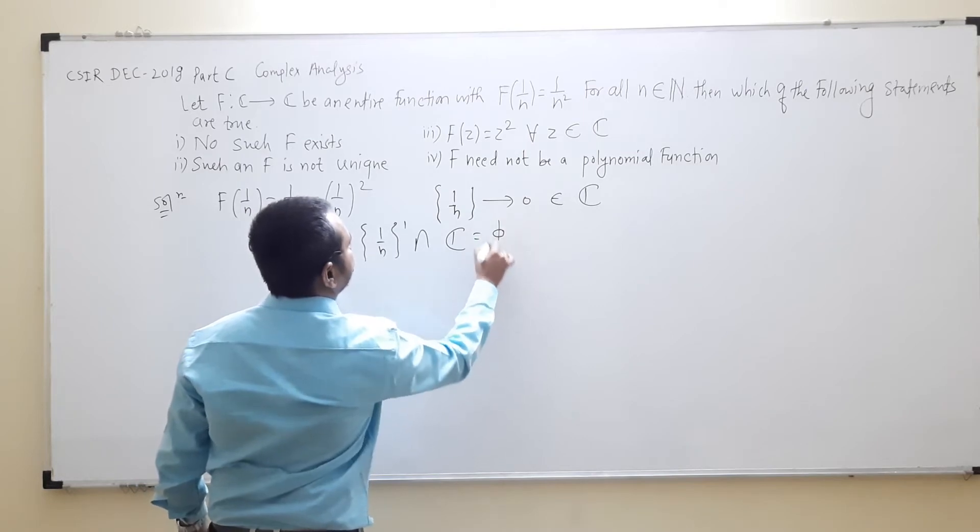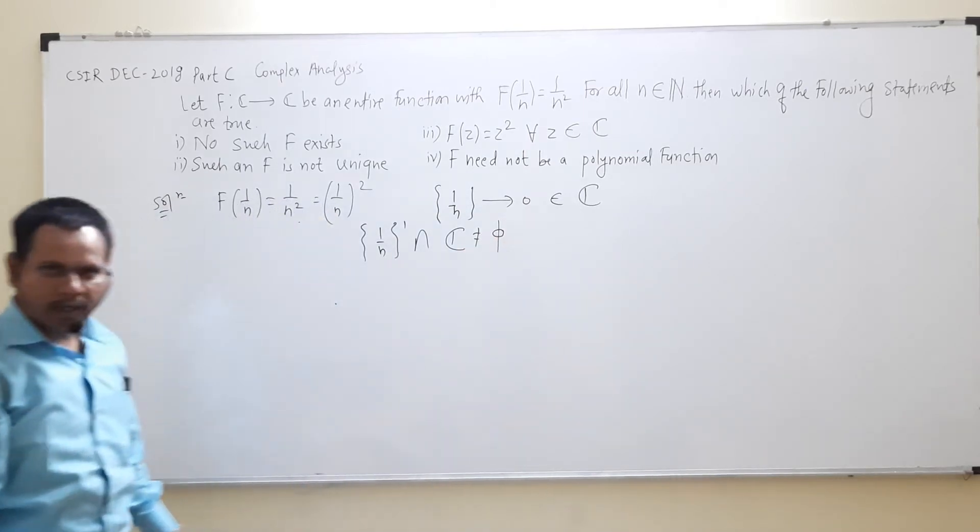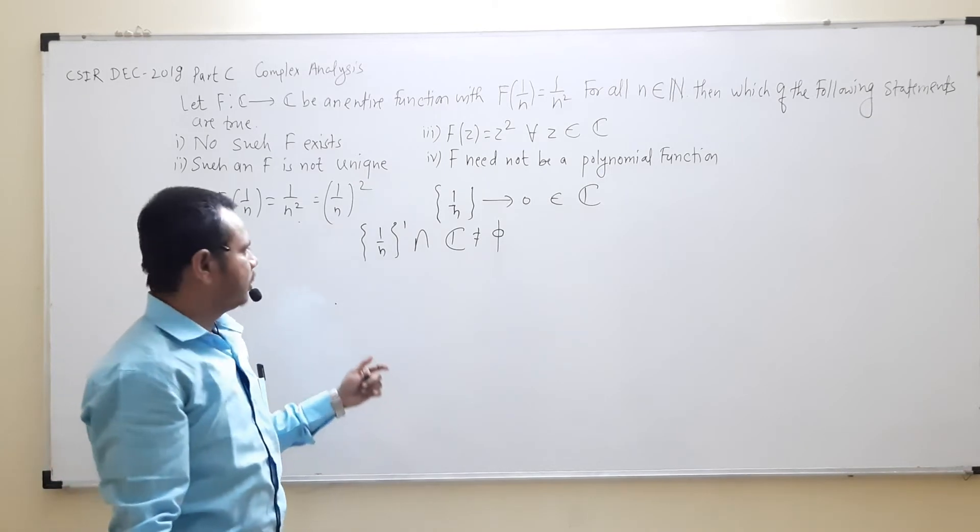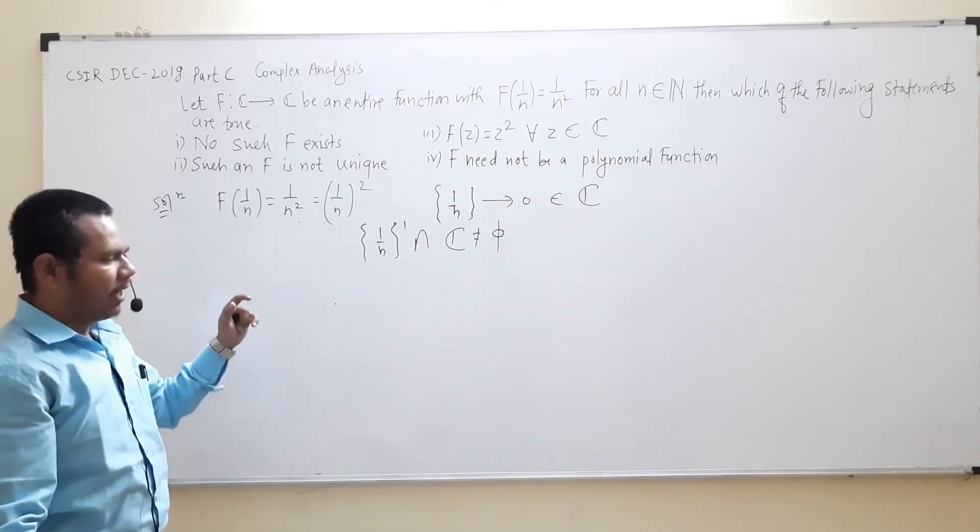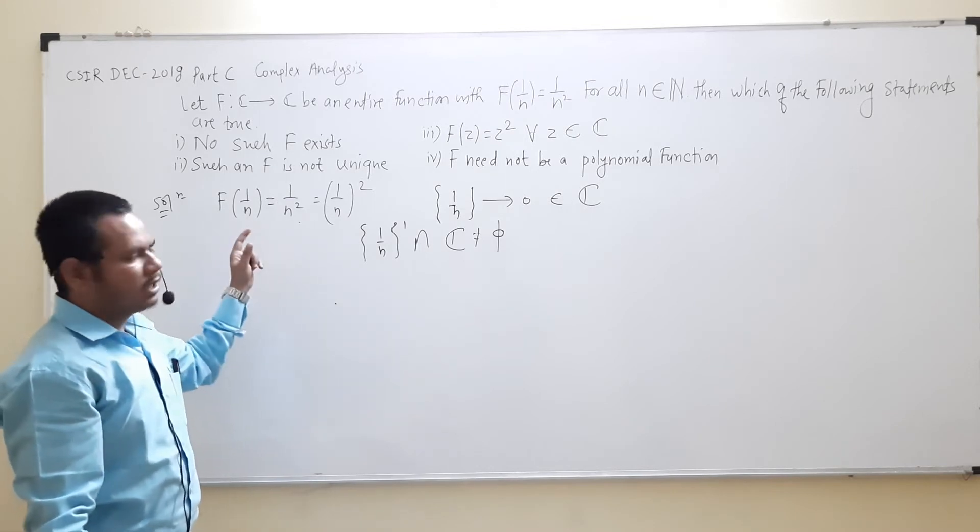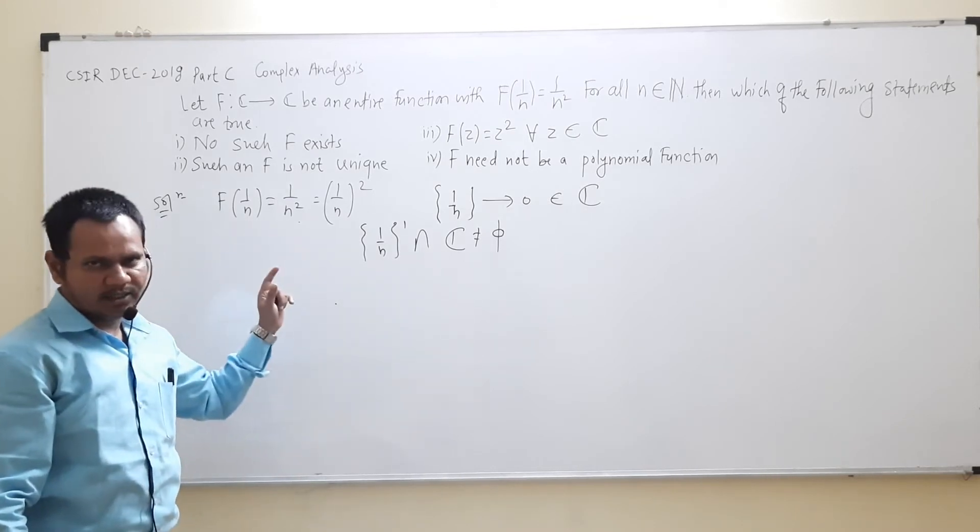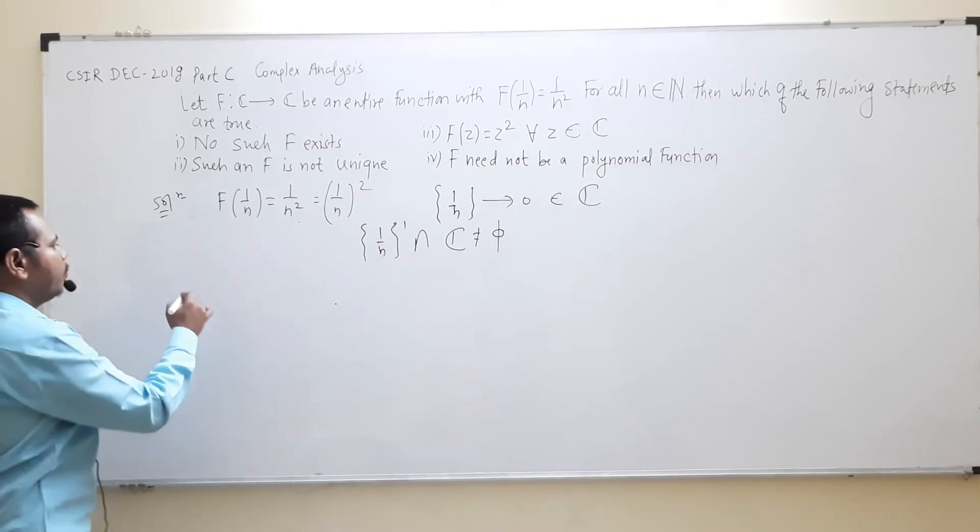By uniqueness theorem, there exists a unique function f which will satisfy this condition. Now we will put 1/n as z in the given function.